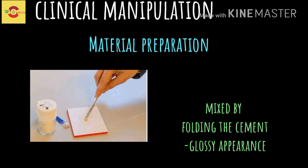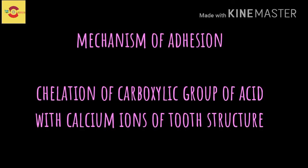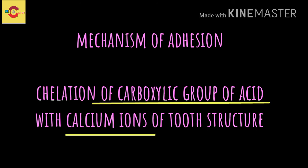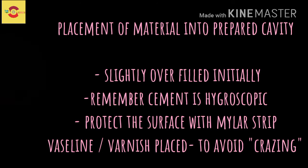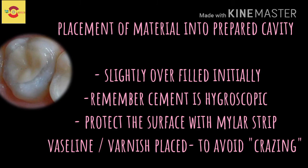The powder should be incorporated rapidly into the liquid using a stiff spatula, and mixed by folding the cement on itself until a uniform glossy appearance is achieved. The mechanism of adhesion is by chelation of the carboxylic groups of the polyacrylic acids with the calcium in the apatite of enamel and dentin. For placement, the material is initially slightly overfilled into the prepared cavity.